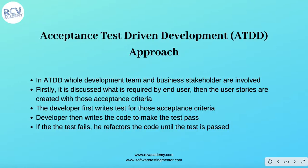In Acceptance Test Driven Development, the whole development team and business stakeholders are involved. In a Test Driven Development approach in an agile project, the testing team and developers are involved to define test cases or unit test cases. However, in ATDD it is the responsibility of the whole team along with business stakeholders to define the test cases and acceptance criteria.